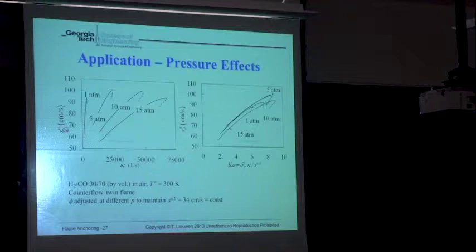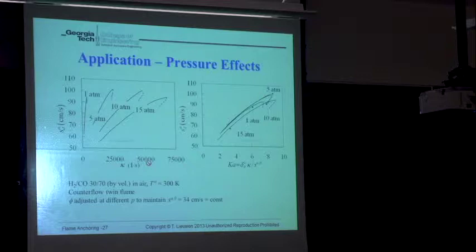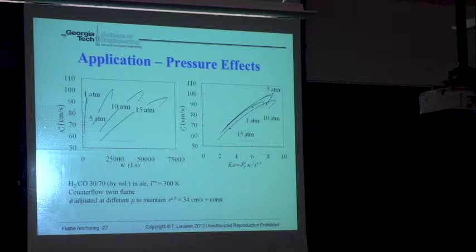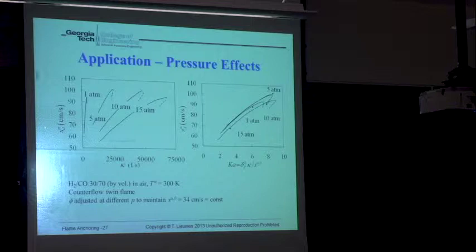This is the flame speed S_D — D denotes the displacement speed, U is with respect to the reactants. This is the stretch rate in absolute units. I've shown you an OPPDIF calculation — that's in the Chemkin suite along with Premix, and it's a really convenient calculator to quantify stretch sensitivities. We ran a calculation for a hydrogen-CO mixture at 1, 5, 10, and 15 bar.